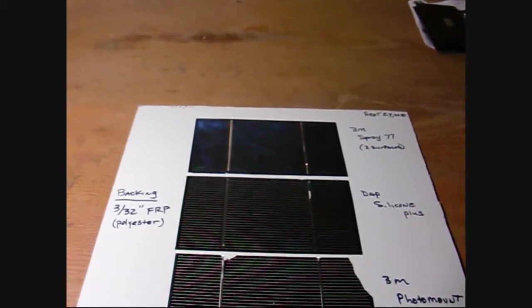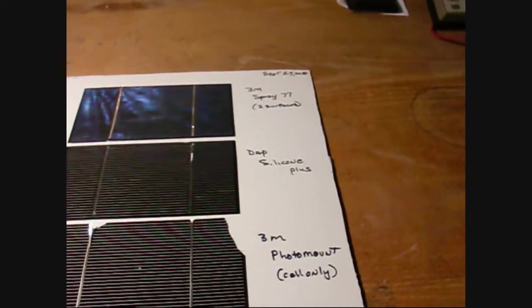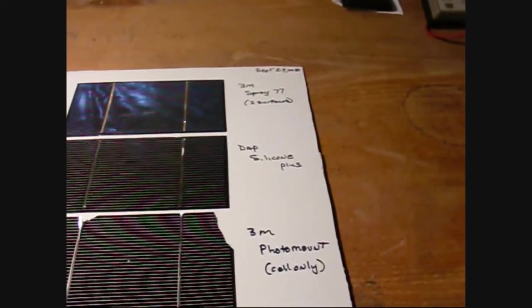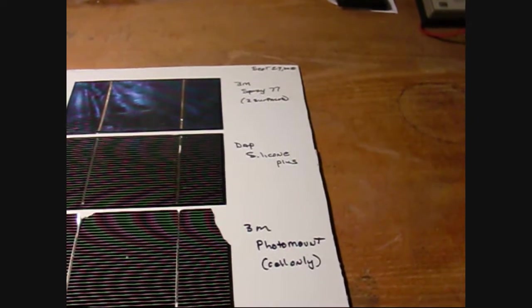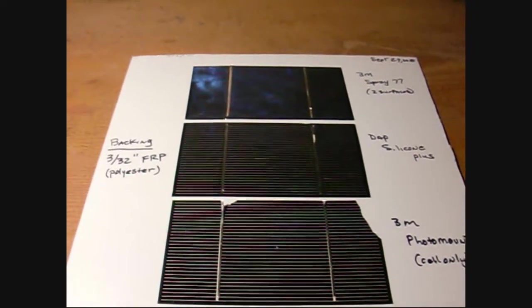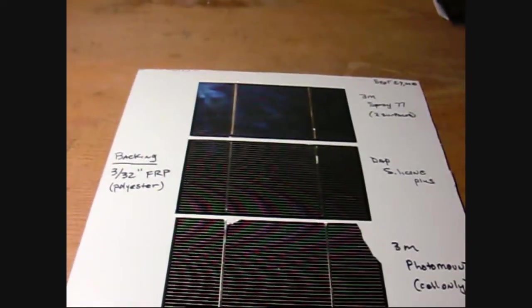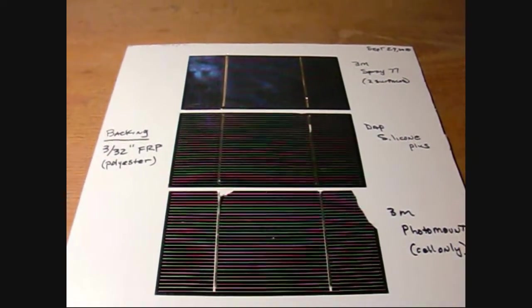Then I tried using some of that DAP silicone plus, which is what I'm also using to hold the glass to the aluminum. That actually works pretty well. I just put a little dab in the center on the FRP itself and then just press the cell in place and smooth it around a little bit.